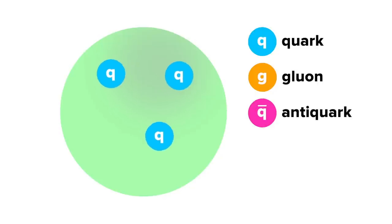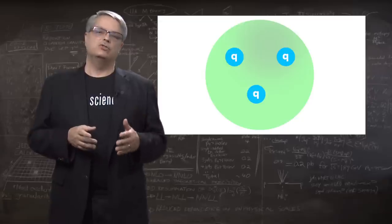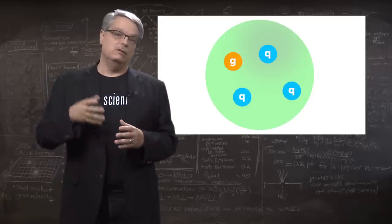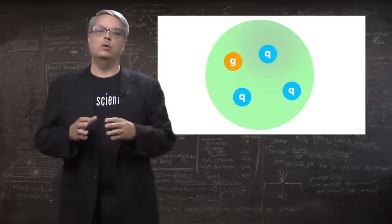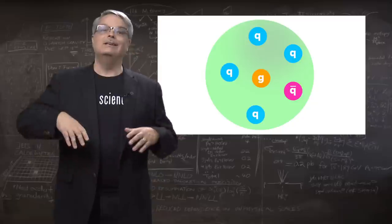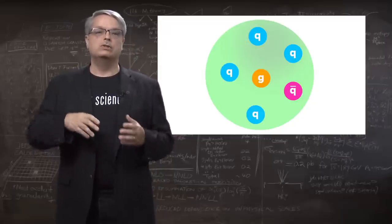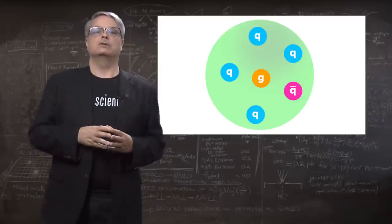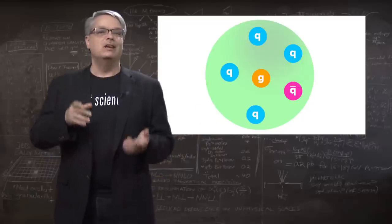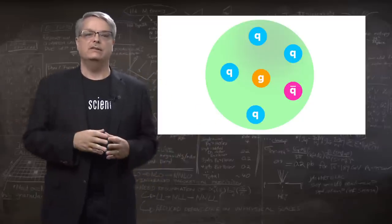If we had a super-fast camera, we could take pictures of what a proton looks like at any particular time. Here is when it has just three quarks. Here is another time when it contains quarks and gluons. And here is another time when it contains quarks, gluons and antimatter quarks. And that's just the sad truth of protons—they're constantly changing what's inside them.